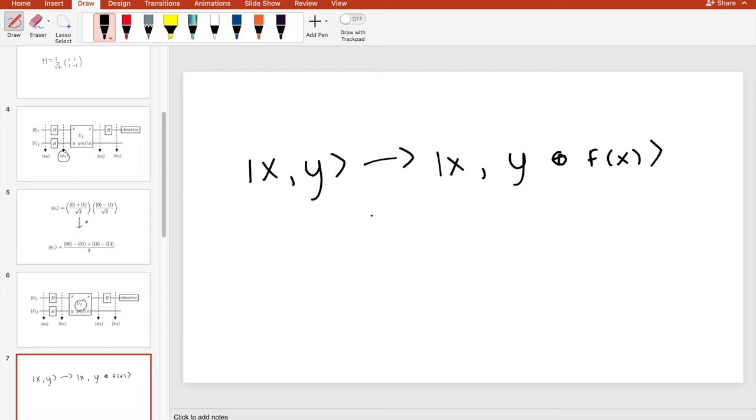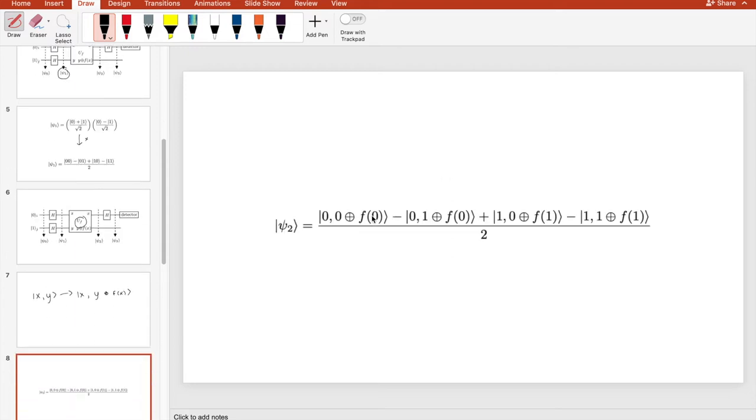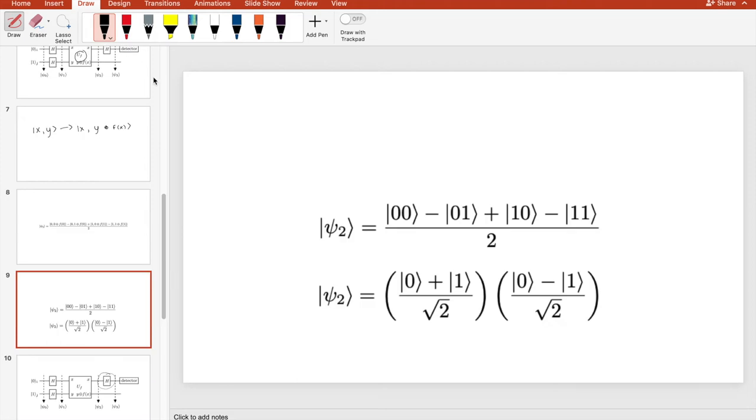So now, as the qubits pass through the unitary matrix, they are acted on as follows. So let's take a look at this oracle on a case-by-case basis. And more specifically, for the purpose of this video, I'll be looking at when f of 0 equals 0, and when f of 1 also equals 0. As you can see, this is an example of a constant function.